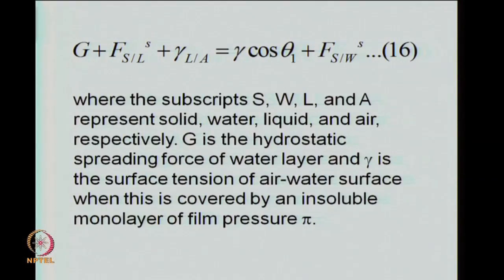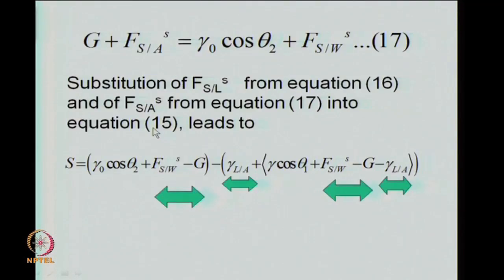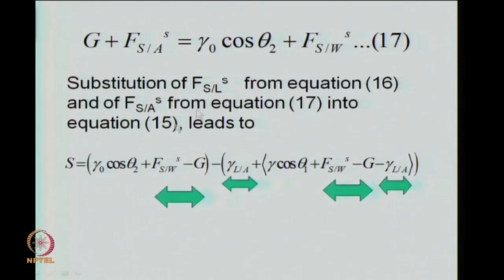Our next equation was the balance of energies visualized through the tension. We could obtain F_SLS from here, and from the water drop placed on the steel surface with contact angle theta 2 — this is a true contact angle, there is nothing to restrain it. For this case, we take G plus F_SS as the spreading part. G is now exerted by this water drop in terms of what can contribute to spreading, plus F_SS equals gamma 0 cos theta 2, which is the equilibrium contact angle theta 2, plus F_SWS.